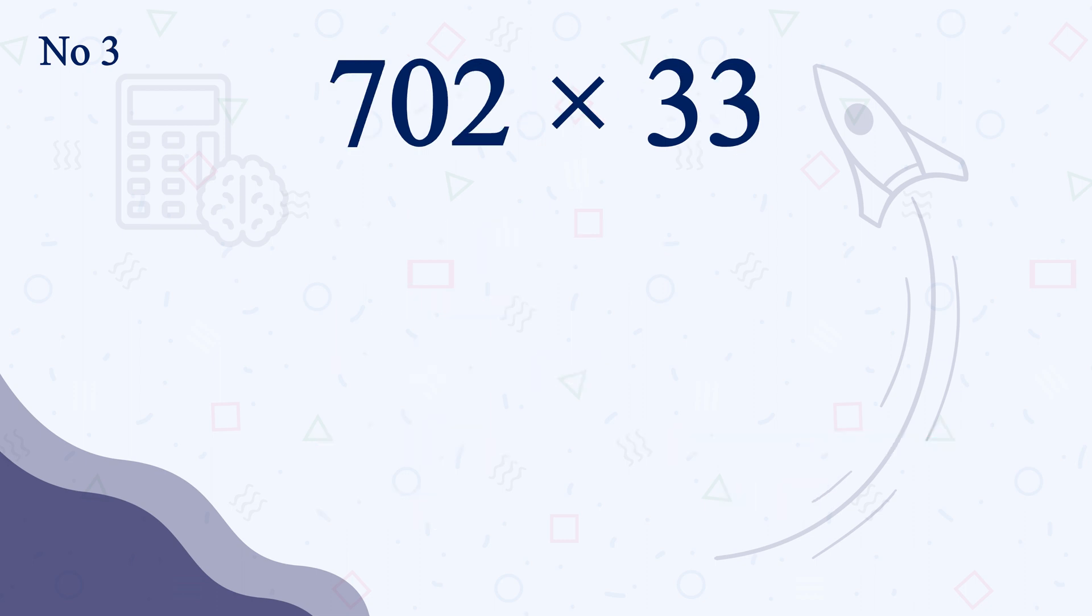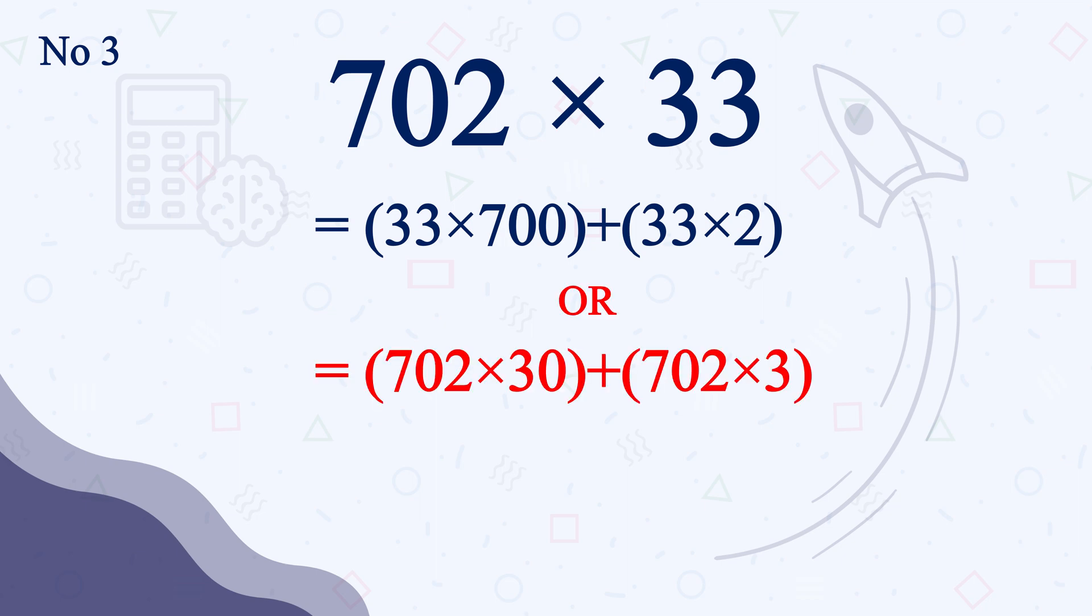Now, number 3, 702 times 33. We can break it down in two ways. Either 33 times 700 plus 33 times 2 or 702 times 30 plus 702 times 3. Both ways are easy. Let's do it in the first way.